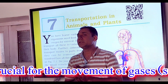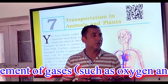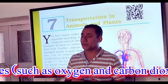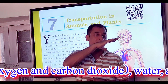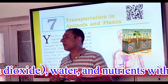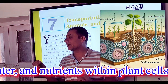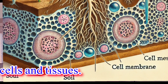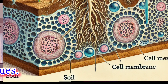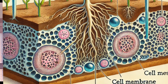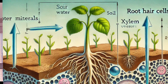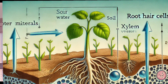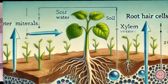Diffusion means the movement of molecules from higher concentration to lower concentration. I will give you an example. When there is something in our home, it spreads. Where many molecules are moving, it is called higher concentration. And where they are moving to, it is called lower concentration.